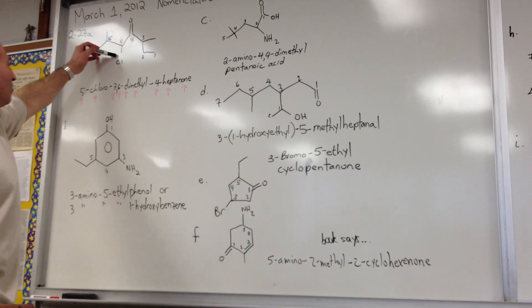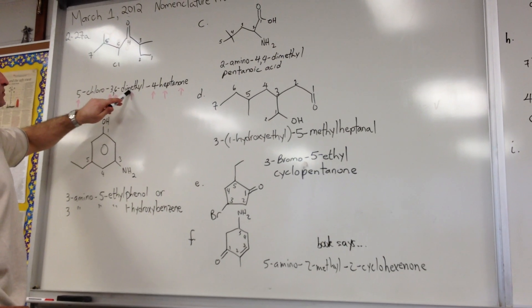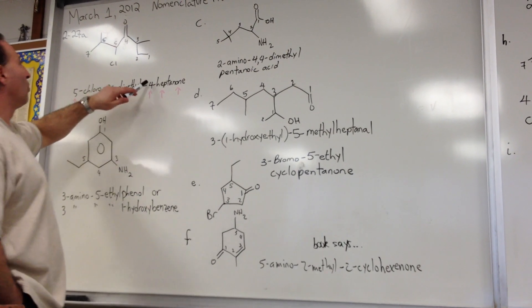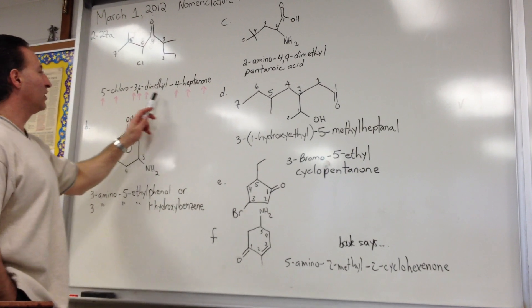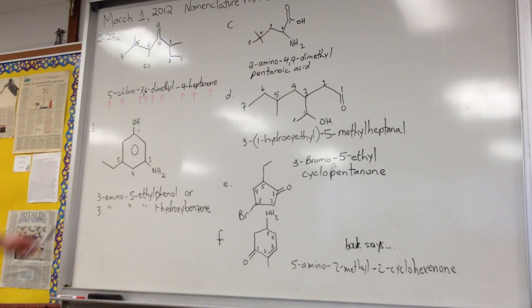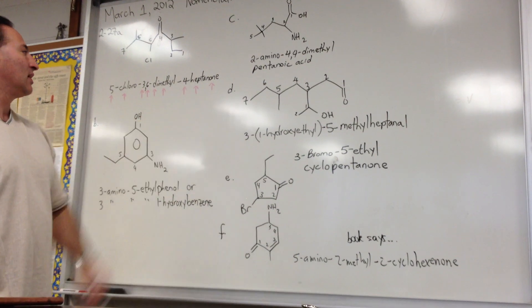So this is called 5-chloro-3,6-dimethyl, so there's two methyls so I put di in front of it, and 4-heptanone, seven carbon chain long. You see I put a red arrow under each one of the words that I would be looking for if I was marking it. So this question would be worth, if you answered this correctly, it would be 2, 4, 6, 8, 9 marks.